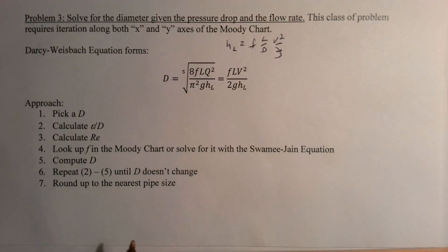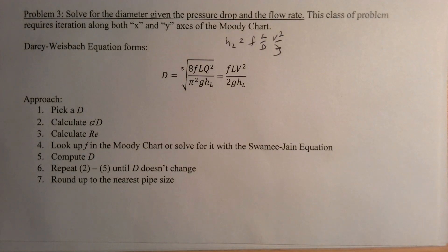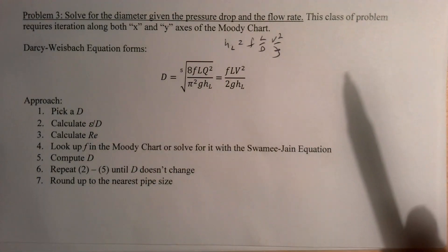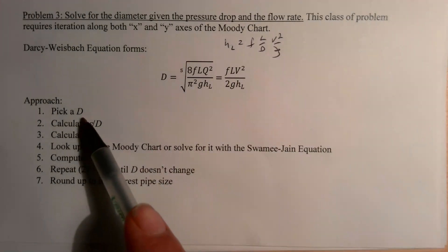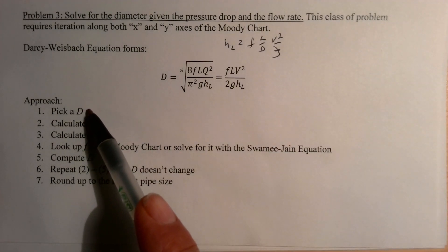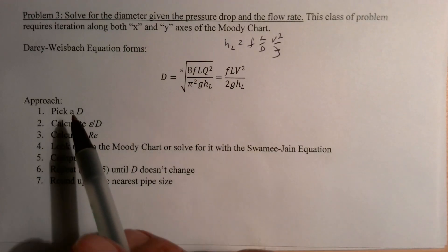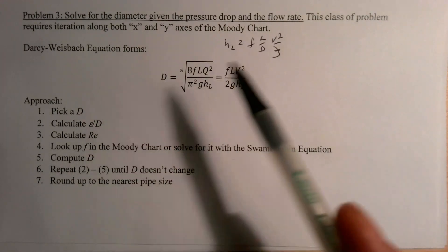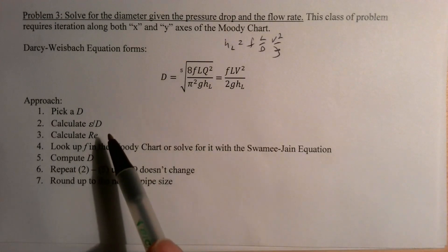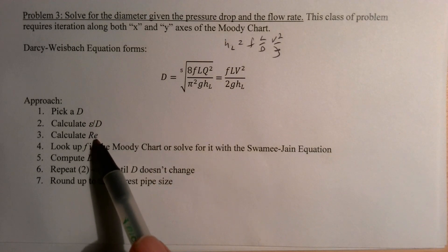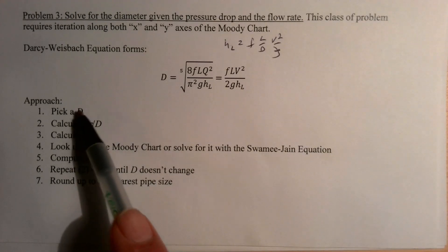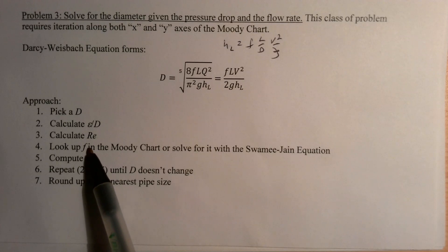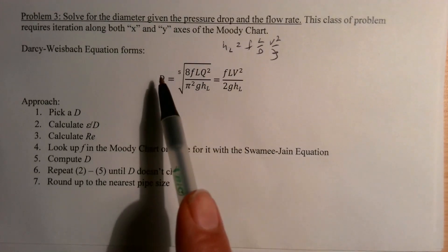In these problems we don't know the friction factor, and we also don't know the relative roughness and Reynolds number needed to compute it. So the approach is iterative: we guess a diameter, look up the fluid properties and pipe material roughness height, compute the Reynolds number and relative roughness, and then use those to get a value for the friction factor from the Moody chart or Swamee-Jain equation.